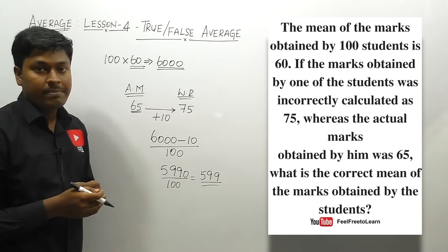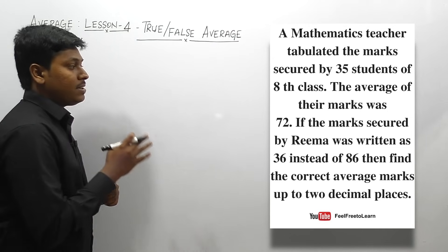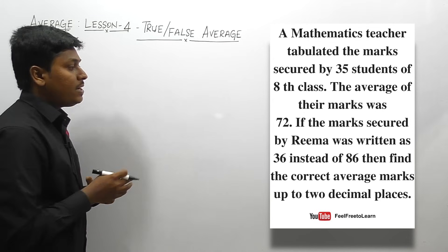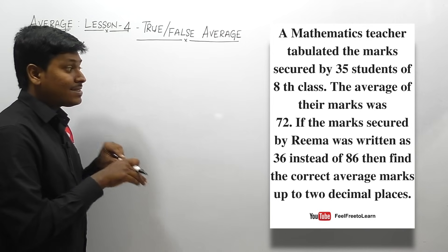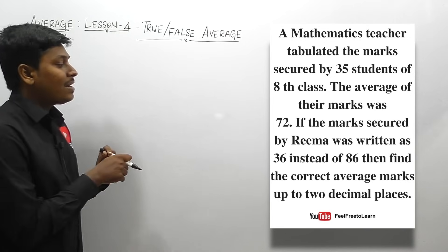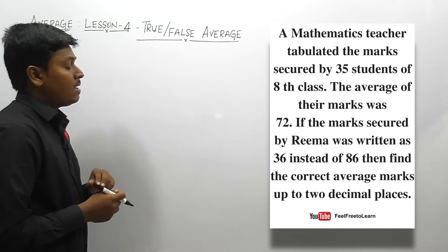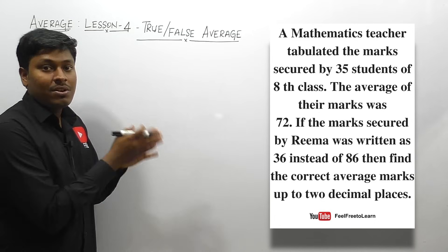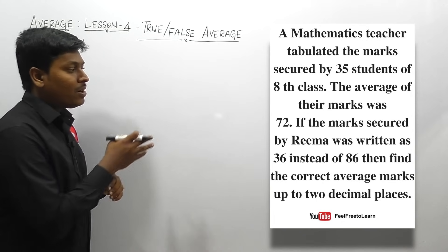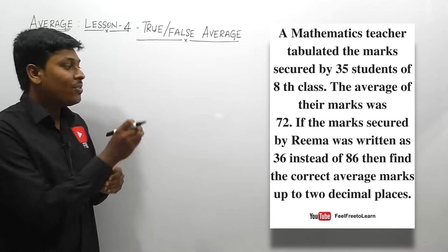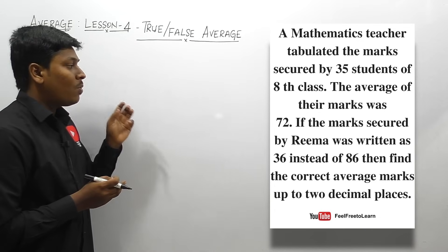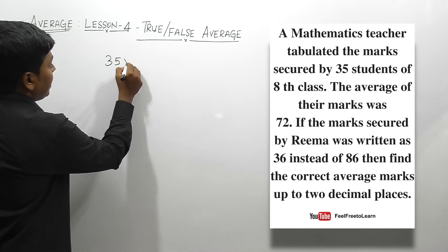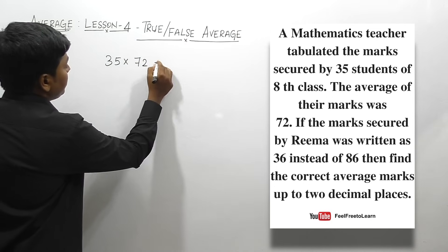Question number two: a mathematics teacher tabulated the marks secured by 35 students of class 8. The average of their marks was 72. If the mark secured by Reema was written as 36 instead of 86, find the correct average marks up to two decimal places. There are 35 students, average is 72 — but this is wrong because Reema's actual mark was 86, wrongly noted as 36.